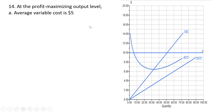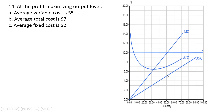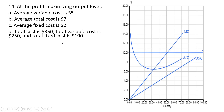Question 14: at the profit-maximizing output, we find where marginal cost intersects demand at 50 units. Average variable cost is $5—walk up to the AVC curve at 50 units, that is $5. Average total cost is $7—walk up to the ATC curve, it's $7. Average fixed cost is $2, the difference between ATC and AVC: 7 minus 5. Total cost is 7 times 50, or $350. Total variable cost is 5 times 50, or $250. Total fixed cost is 2 times 50, or $100. All statements are correct. Answer choice E.